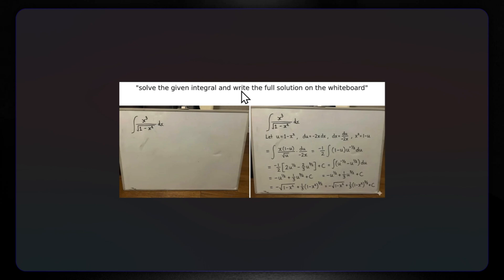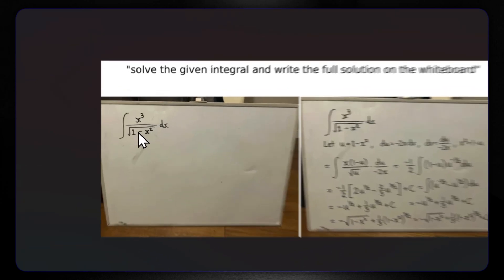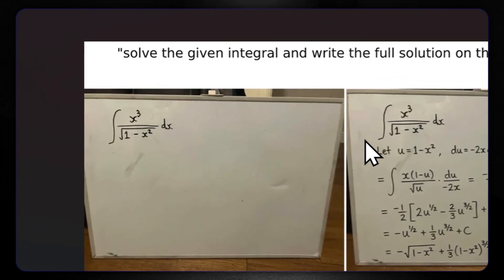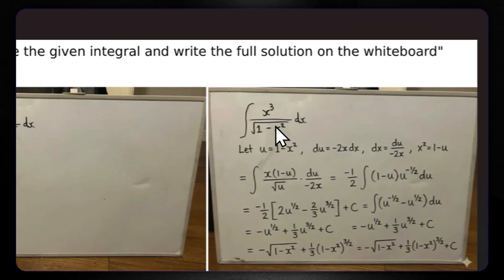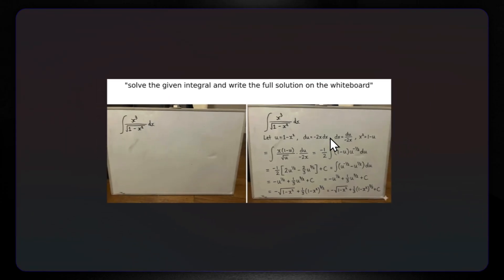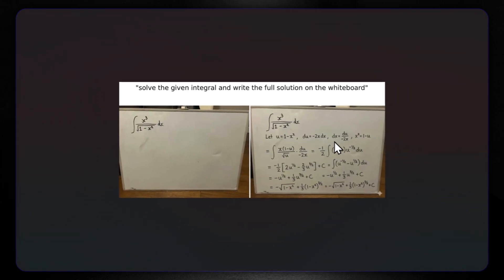Then the math: solve the given integral and write the full solution on the whiteboard. Here is the given integral, and this is what we received written down on the board. Everything looks correct — it's a fairly intermediate integral, and it looks nice.